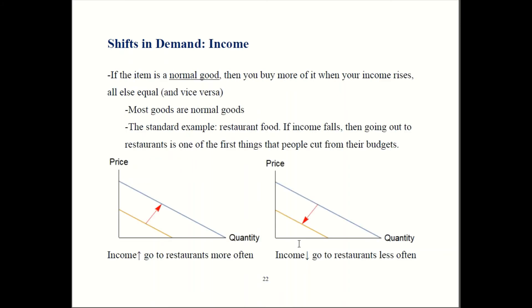Let's talk about income first. Most goods are what we call normal goods. The definition of a normal good is one that you buy more of when you have higher income, all else equal. It also means that if you have an income drop, you're going to buy less of the normal good, all else equal.